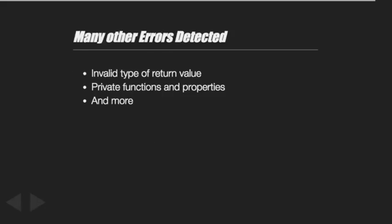There are many other errors detected. You can mark a function as private to show it should only be called from your class. You can do type checking on properties as well - you can say a property is always a number and can never be null, for example. I do 3D for a living and this is a very interesting case.